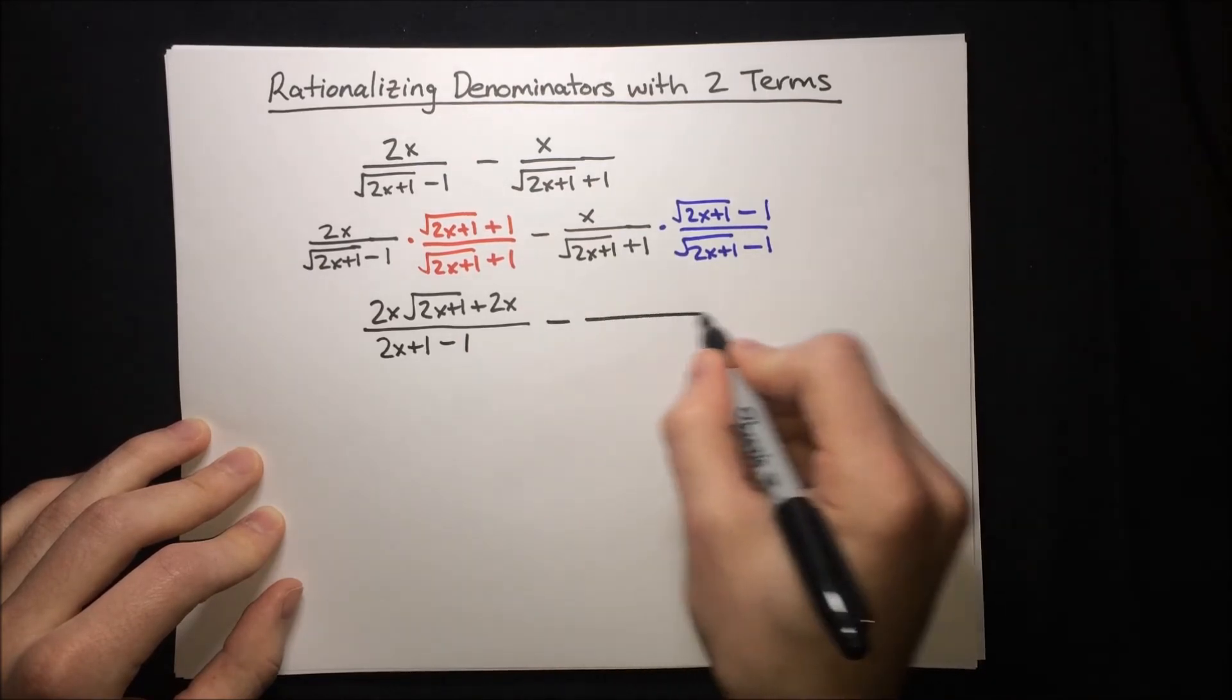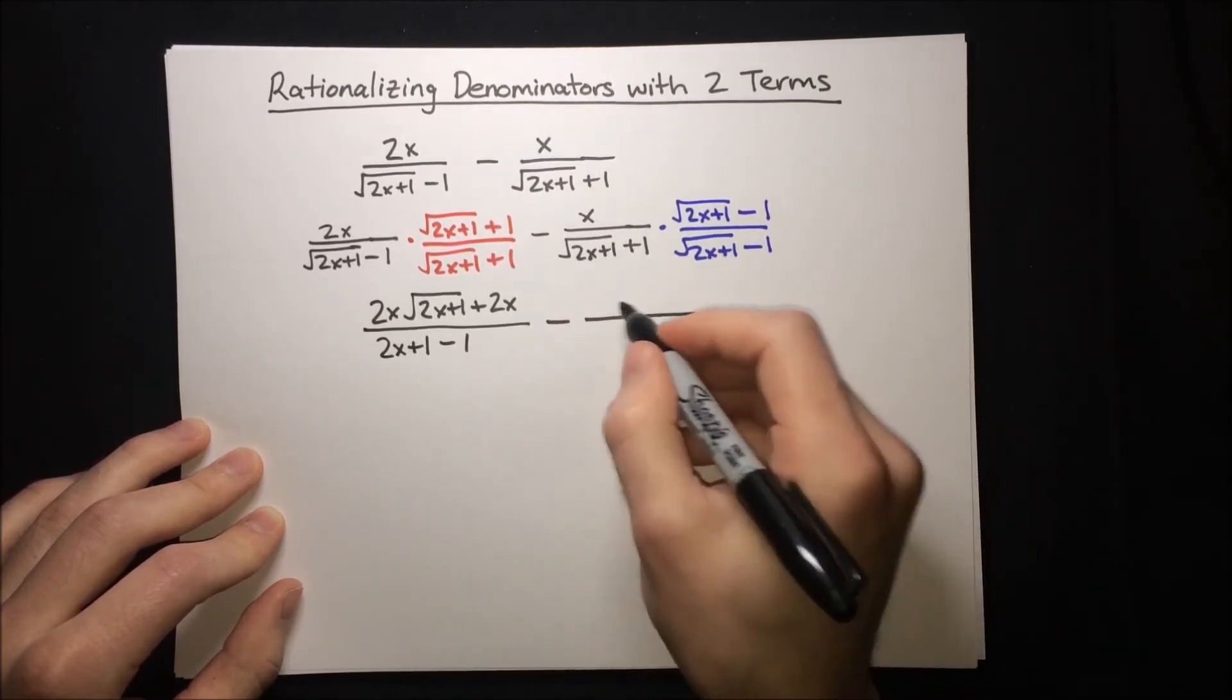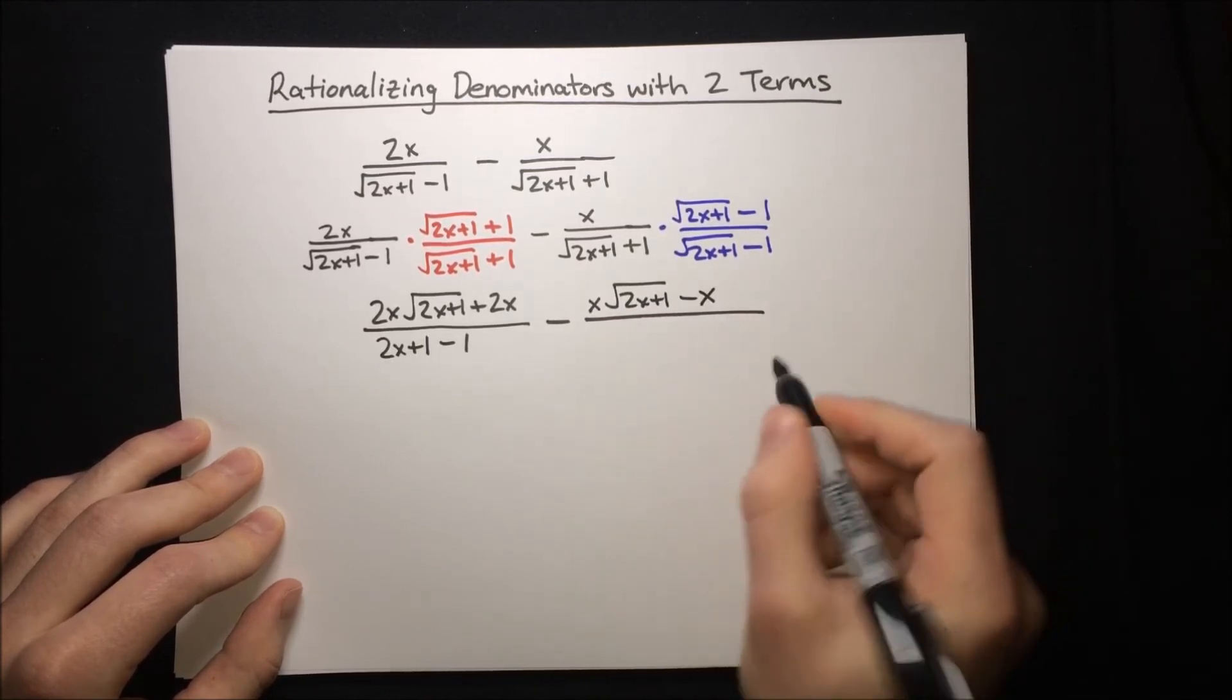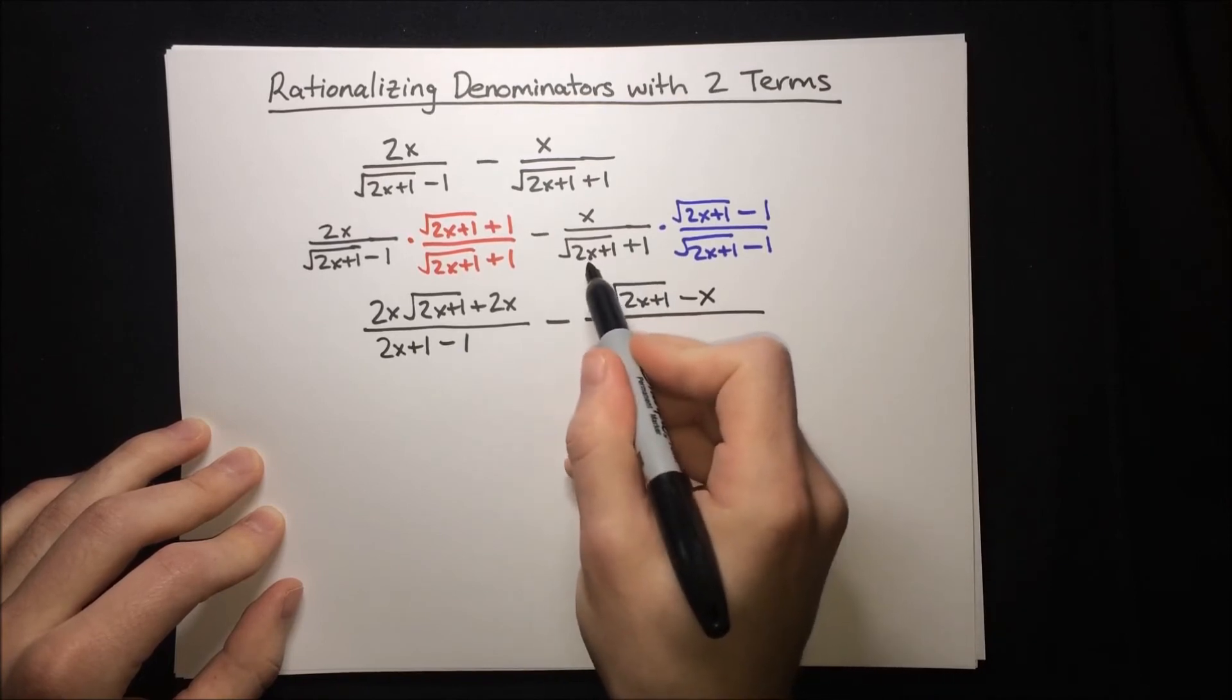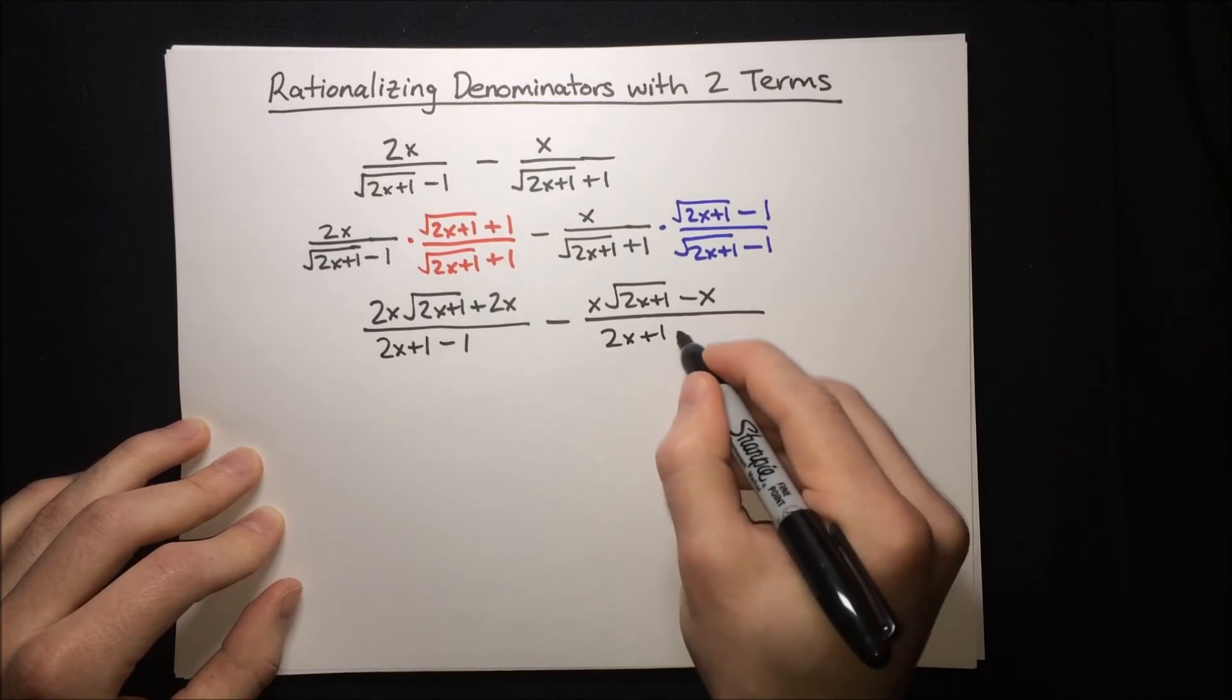And here we've got the same situation in the other fraction, so multiplying on top, we've got x root 2x plus 1 minus x, and on the bottom, this is again a difference of squares, so 2x plus 1 minus 1.